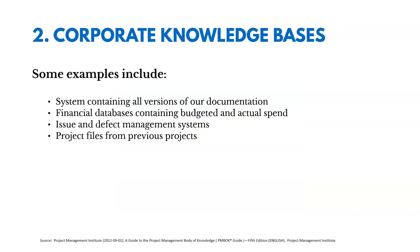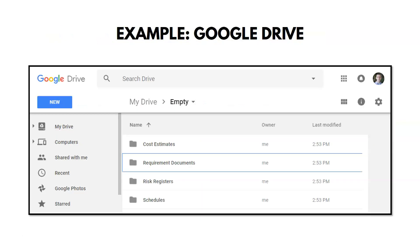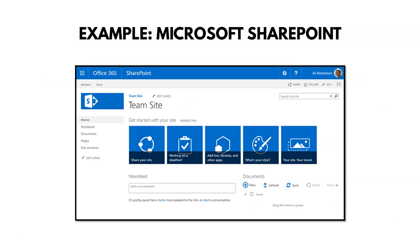The second aspect of organizational process assets, in addition to processes and procedures, are corporate knowledge bases. Some examples could include systems containing all versions of our documents, financial databases, issues and defect management systems, and project files from previous projects. Google Drive is a simple example of a corporate knowledge base — several companies use Google Services to share and store files. Another example used even more is Microsoft SharePoint, where the team or organization can share documentation. Across the organization, all project teams may be asked to upload their documentation to SharePoint so future teams working on similar projects can refer back to it.